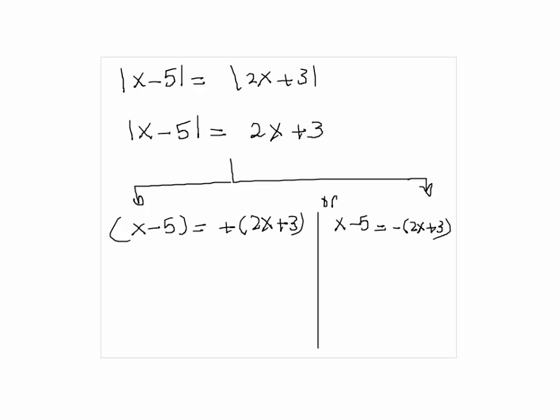By letting what we have on the left hand side equal to plus what you have on the right hand side, and then examine the second case: what we have on the left hand side is equal to minus what you have on the right hand side. So we have to distribute, so we get x minus 5 is equal to 2x plus 3.